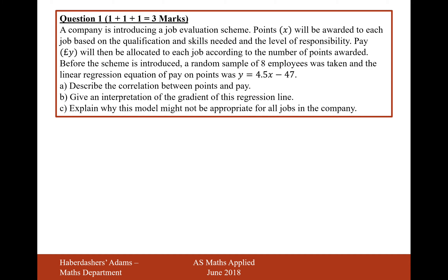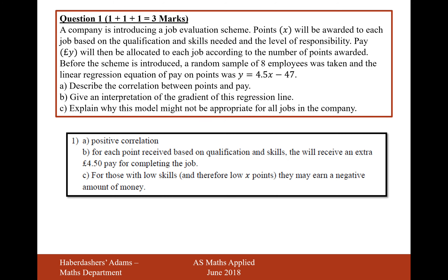Describe the correlation between points and pay. It is positive correlation because the graph is going to have a Y-intercept at minus 47 and then a gradient of 4.5. So the gradient is 4.5, Y-intercept minus 47, therefore it's positive correlation.